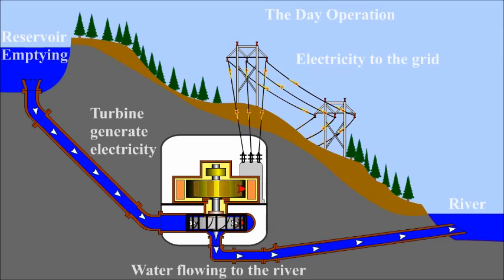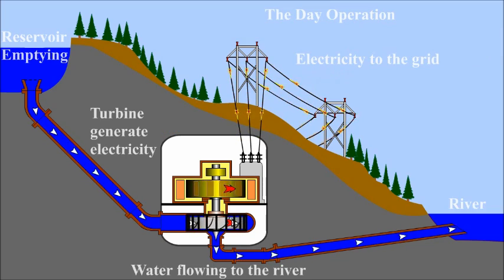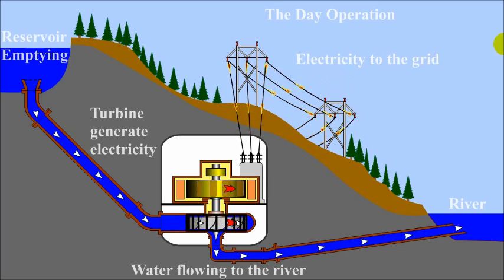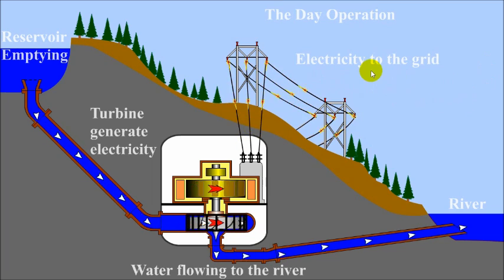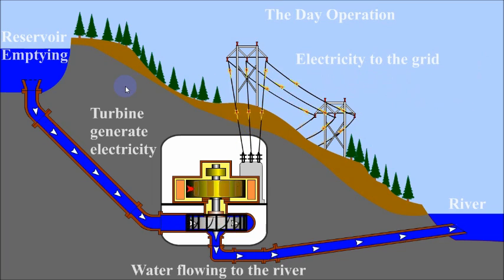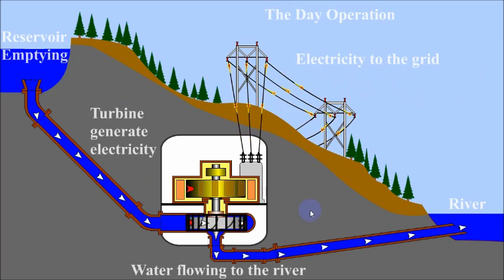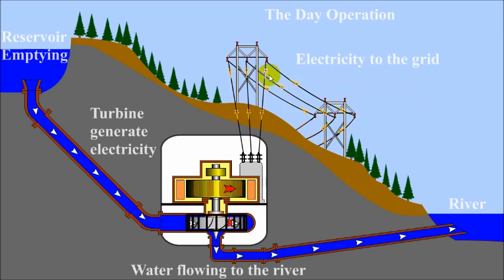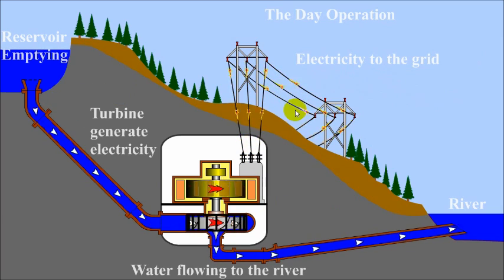Here is the animation of the daytime operation. Note that the power plant operates just like a dam — the water flows downhill and the generated electricity is fed to the grid. The water level in the upper reservoir is falling.